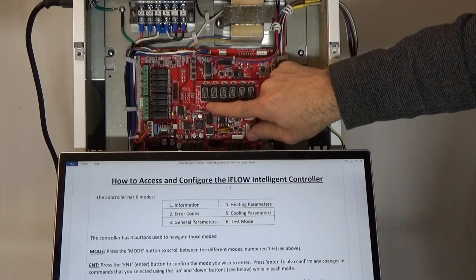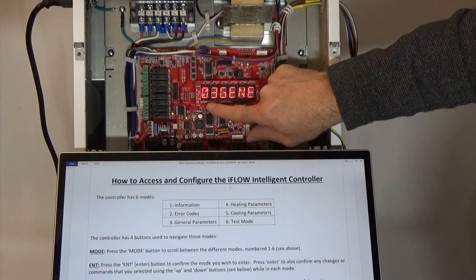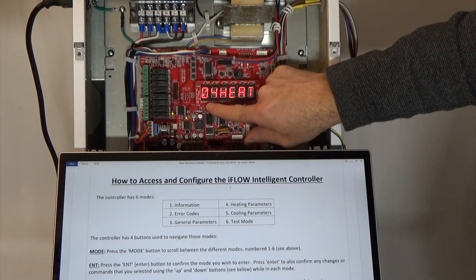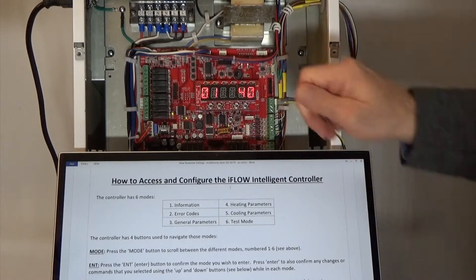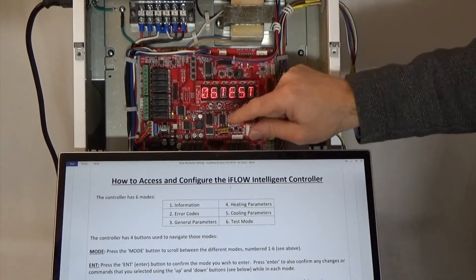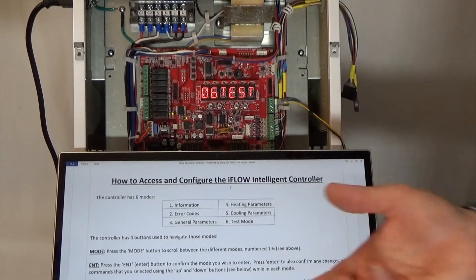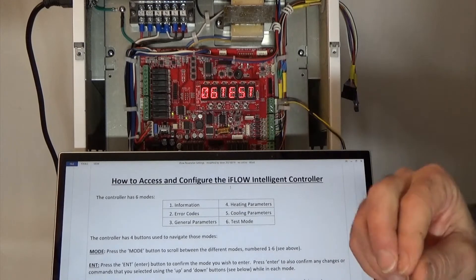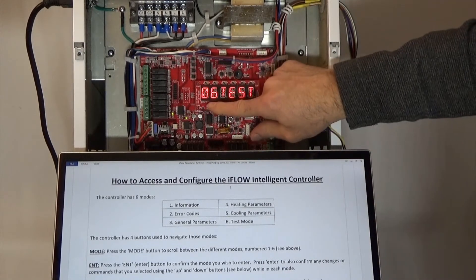So again: six modes — one through six — for the Wi-Fi and zoning models, and modes one through four for the base models.